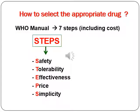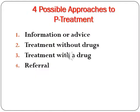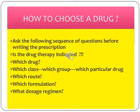To select a suitable drug, the WHO manual shows seven steps standing for: Safety, Tolerability, Effectiveness, Price, and Simplicity. The four approaches to treatment include: information or advice, treatment without drugs, treatment with drugs, and referral. Before writing a prescription, ask: Is drug therapy indicated? Which drug, which class, which group, which particular drug? Which route of administration, which formulation, and what dosage regimen?